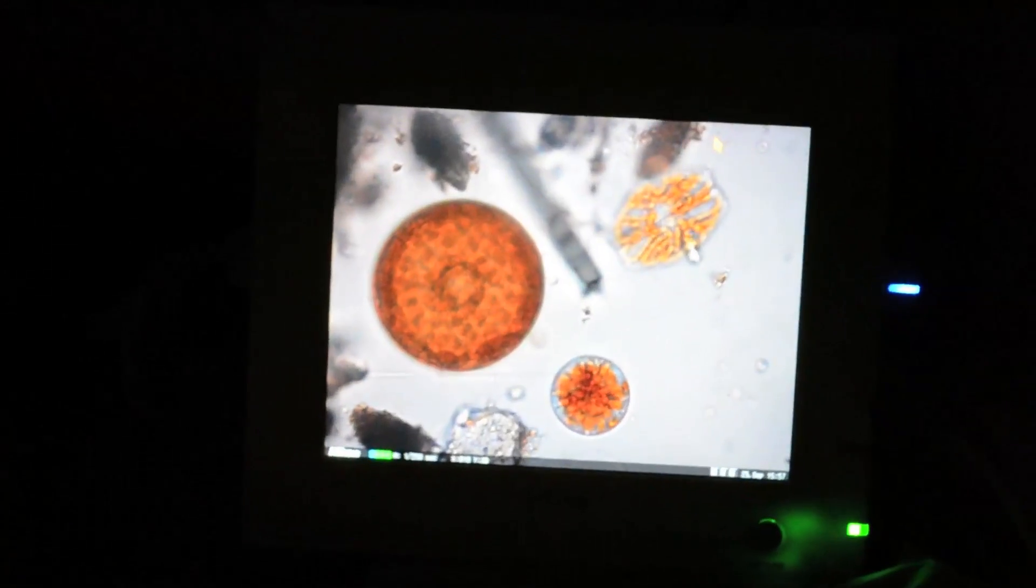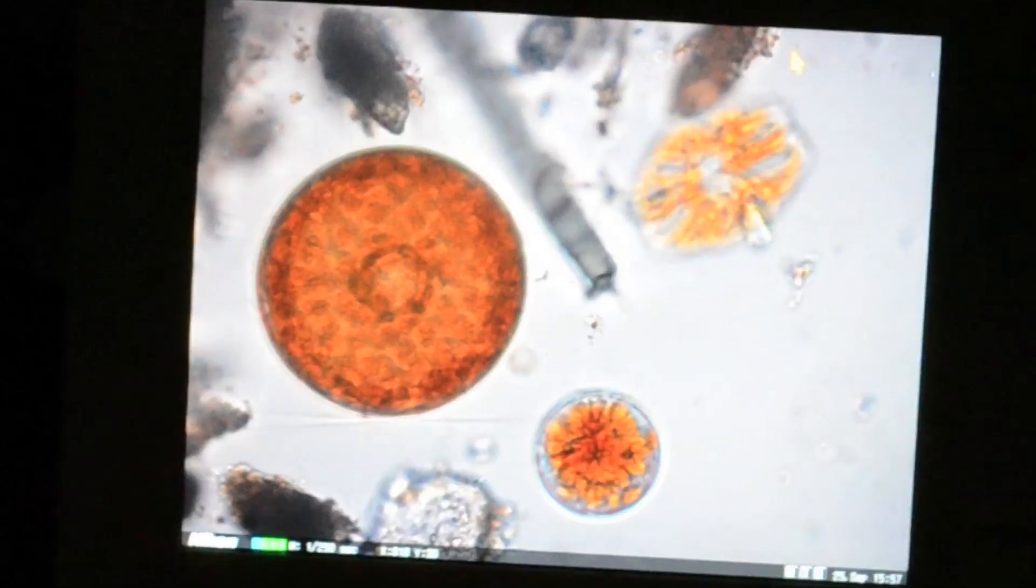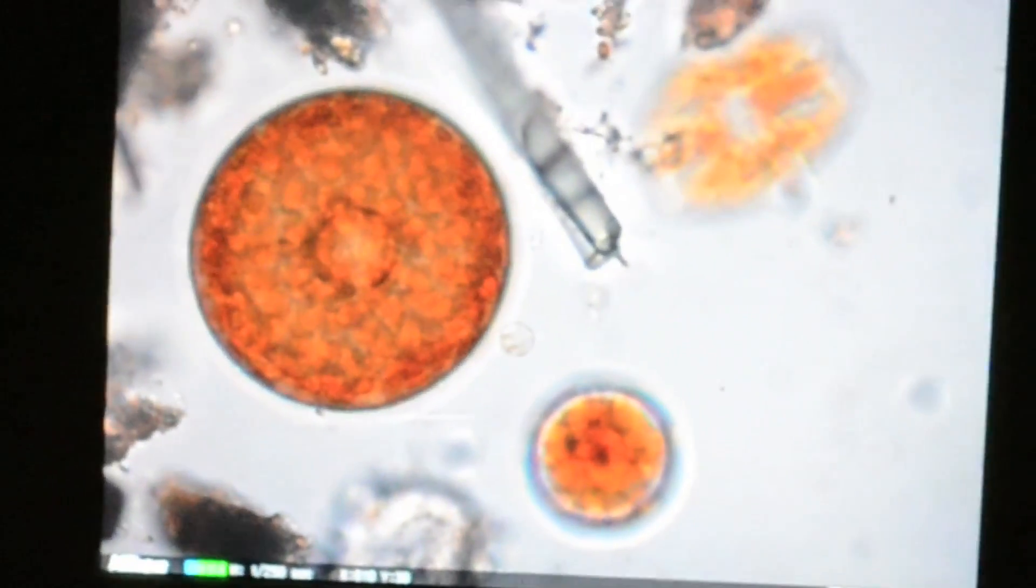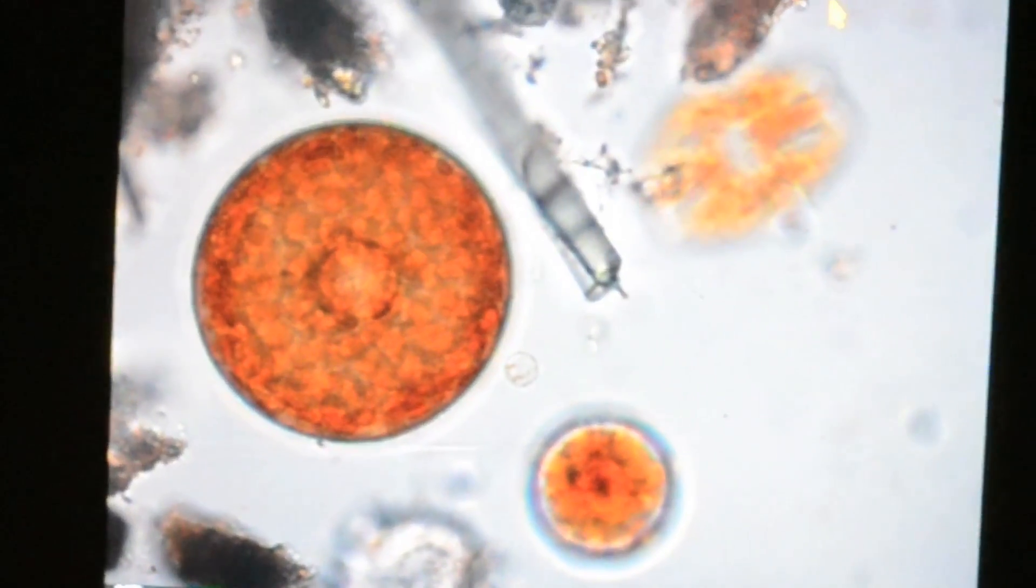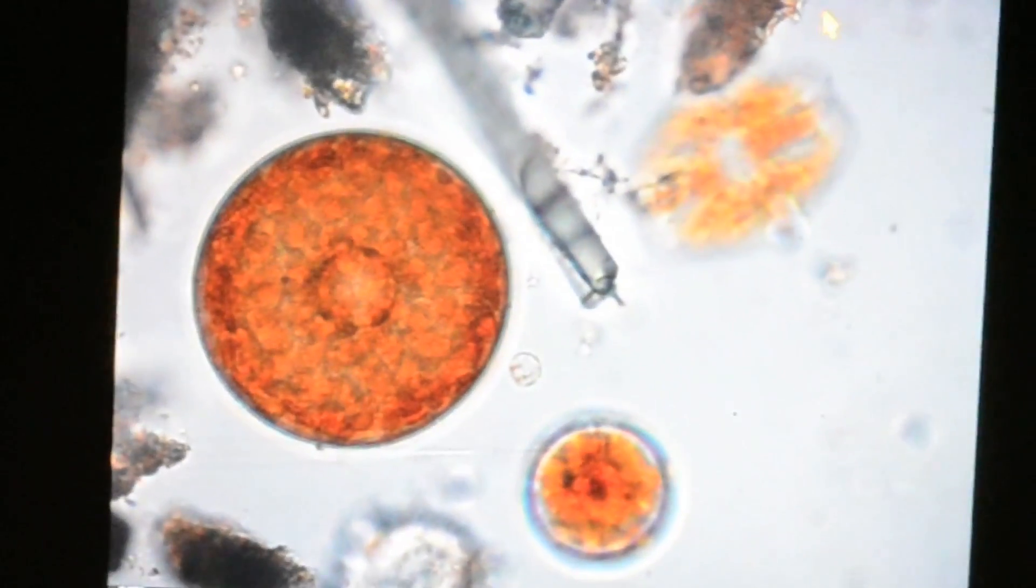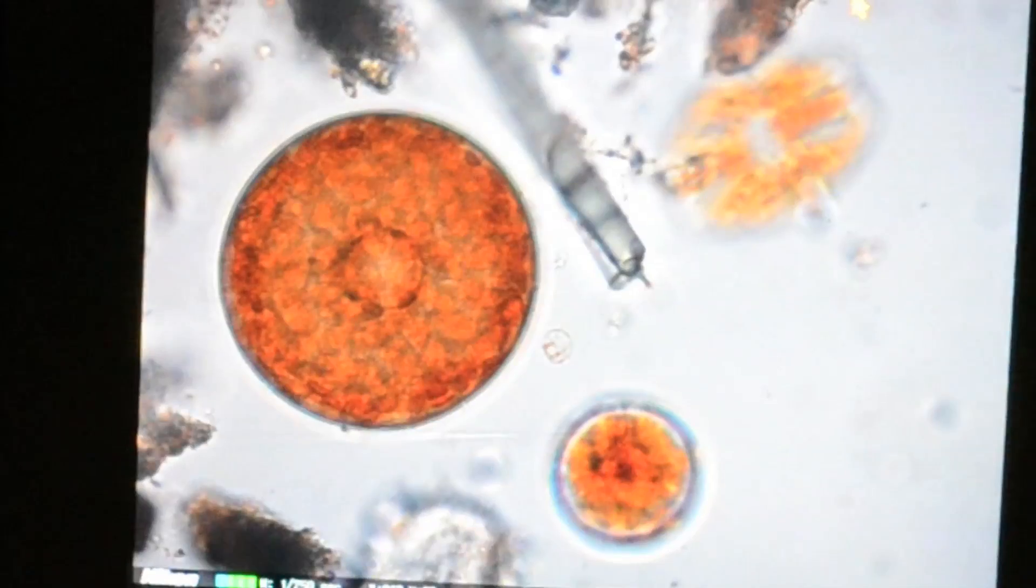What you're looking at here, and I have to focus up and down because they're in different planes even on the slide, this one here on the left is a Cosinodiscus oculus iridus. If you imagine a petri dish, what you're looking at is down on top of it. The walls are made out of glass.